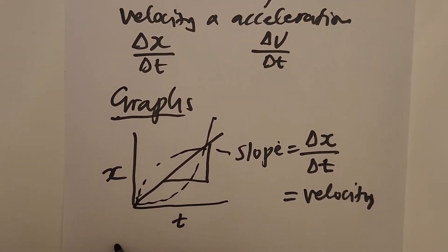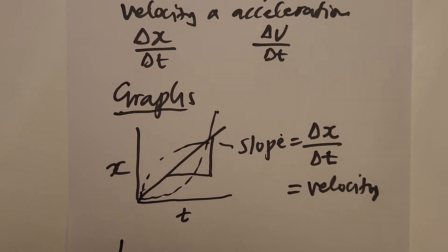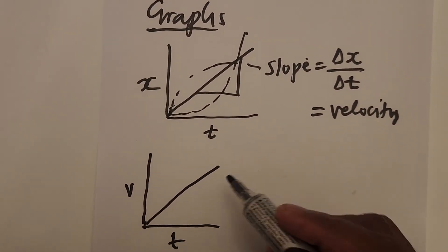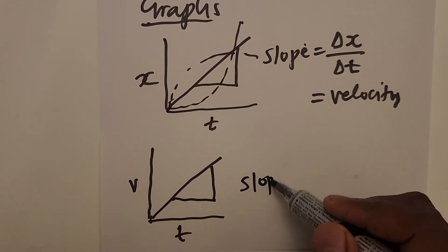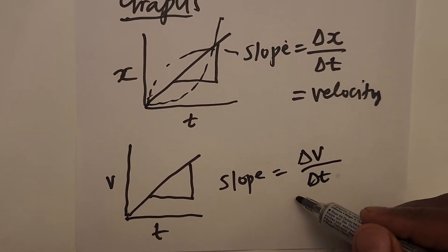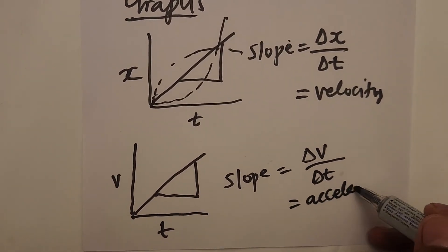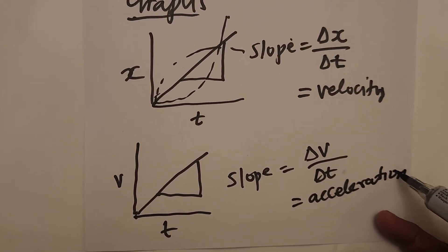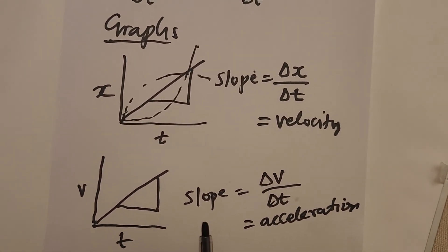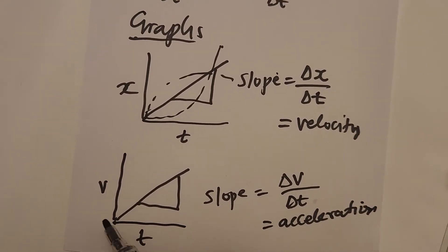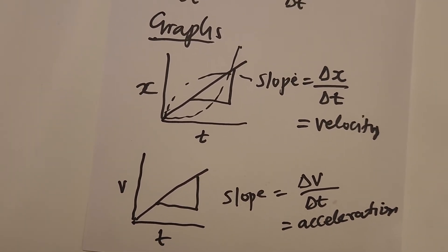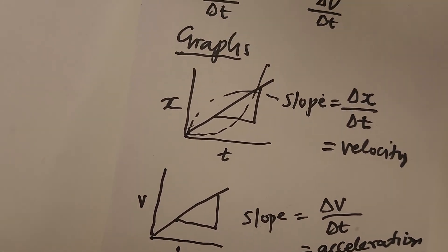On a velocity-time graph, the slope of the line — which is delta v over delta t — represents acceleration. If the slope is constant, acceleration is constant. This is very important for the projectile section, because acceleration will be constant throughout, so we will always draw a straight line on the velocity-time graph.